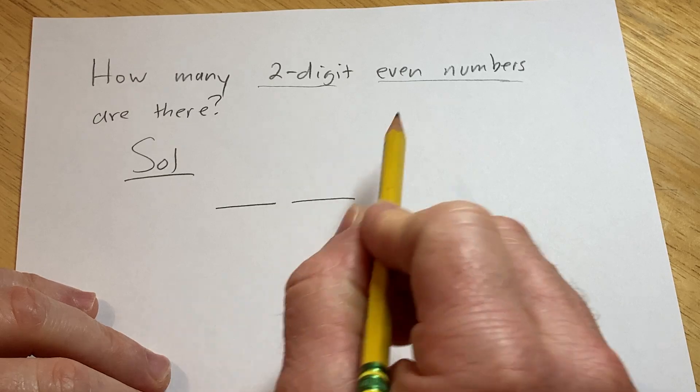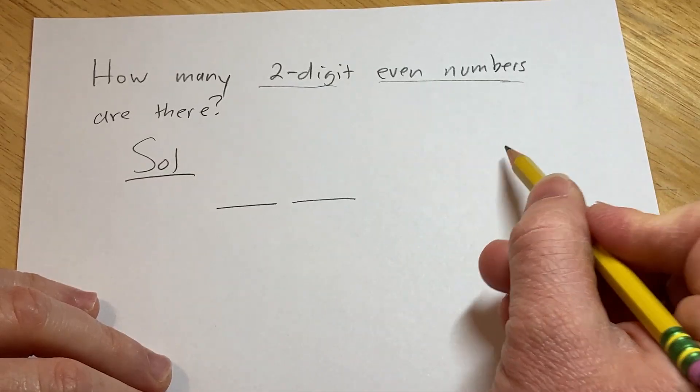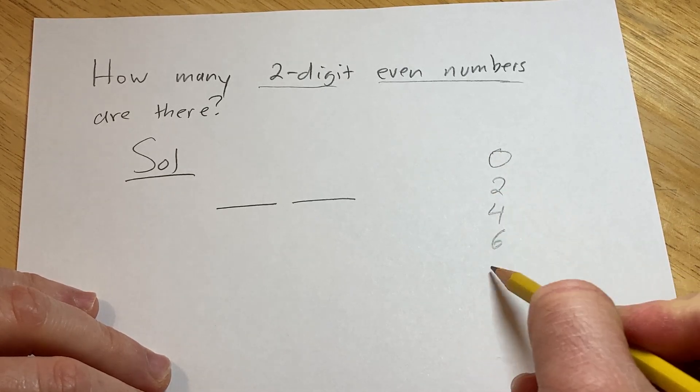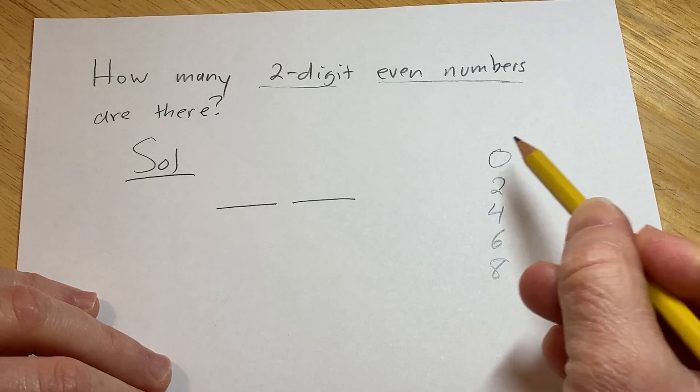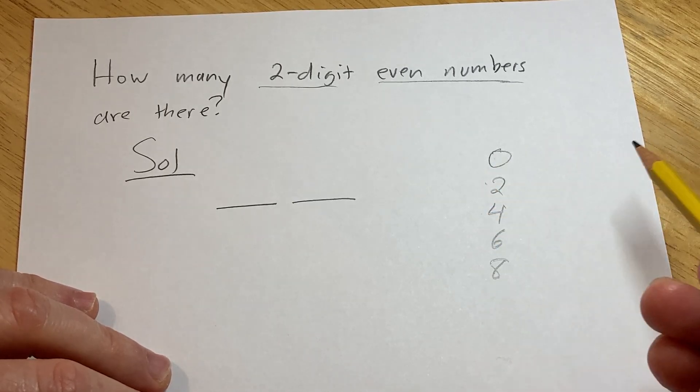So we have to think about what we know about even numbers. If we have an even number, it has to end in a zero, a two, a four, a six, or an eight. Right? So like 10, 12, 14, 16, 18 would be examples of even numbers.